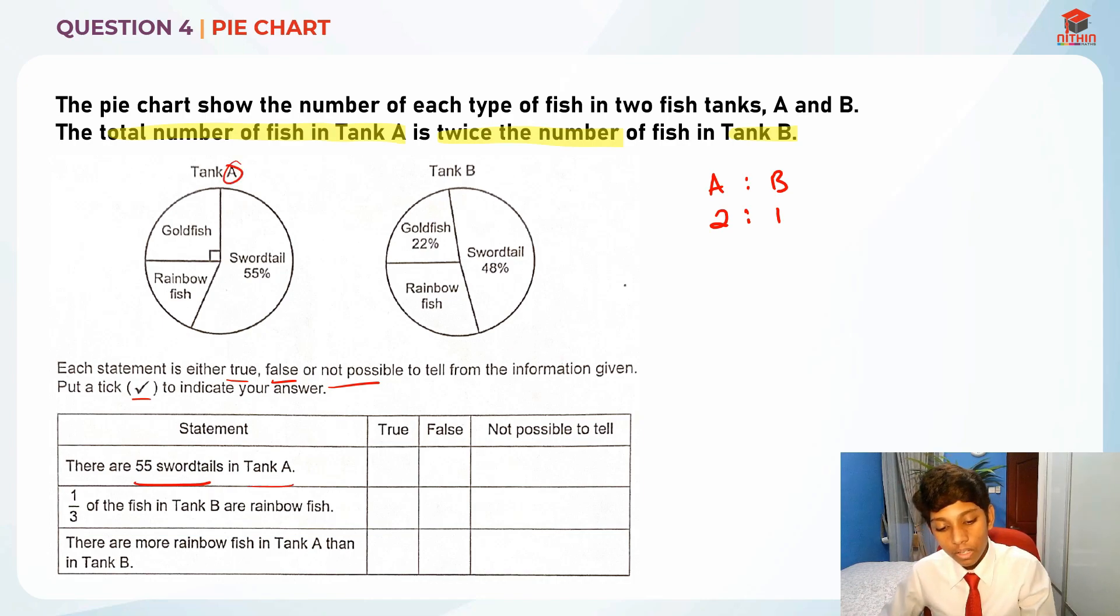In tank A swordtails are actually 55 percent. There's something you need to know: when something is a percentage it doesn't actually need to mean that it is that amount. If the total in tank A was 100, the number of swordtails will actually be 55 because 55 percent of 100 is 55. But if it were to be 200, it won't be 55 anymore, it will actually be 55 times 2 which is 110.